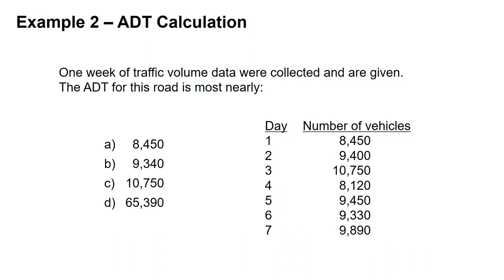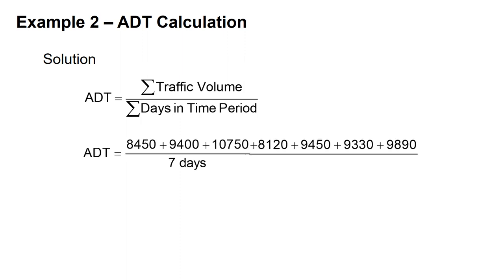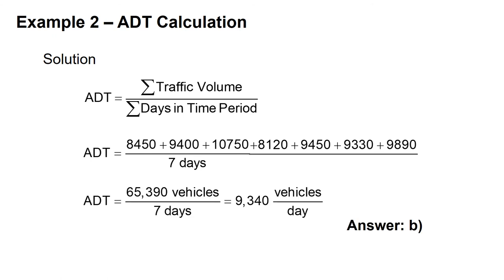Example: We're told we have one week of traffic volume data and asked to find the ADT for this roadway. We have seven days of traffic volume with the number of vehicles on each day. For our ADT, we take the sum of the traffic volume divided by the number of days: 65,390 total vehicles over a seven-day period gives an ADT of 9,340 vehicles per day, which is answer B.